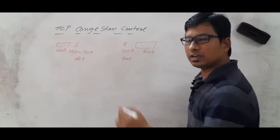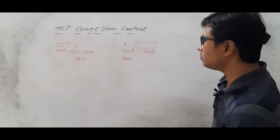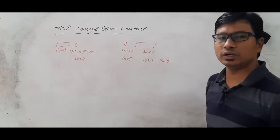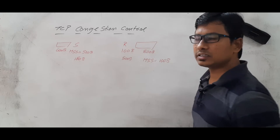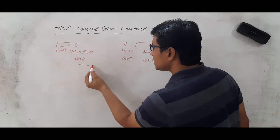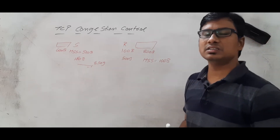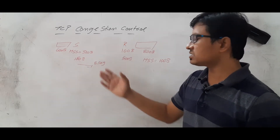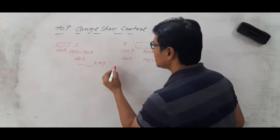First they will decide the maximum segment size. Since one side has 100 bytes and the other has 500 bytes, they take the minimum — so each segment consists of 100 bytes. Now, the advertisement window of the receiver is 800 bytes. So the sender can send 8 segments at a time, because 800 bytes divided by 100 bytes per segment equals 8. Similarly, the receiver can send 6 segments at a time.